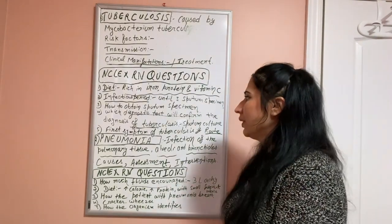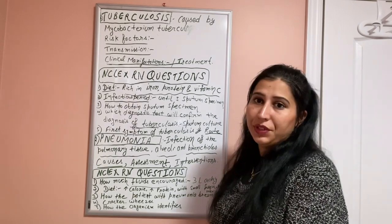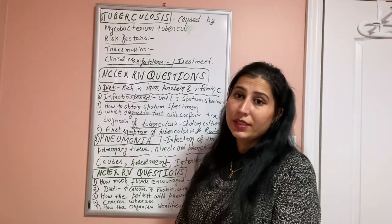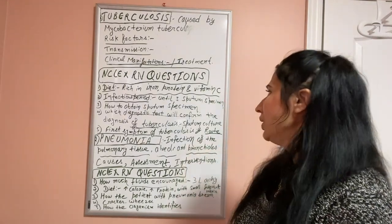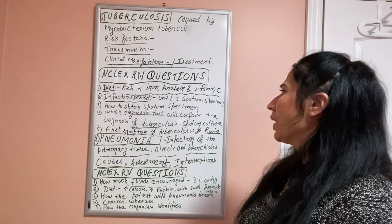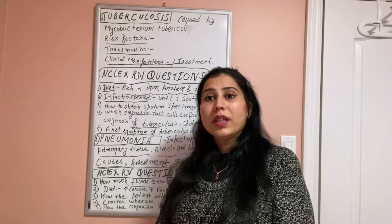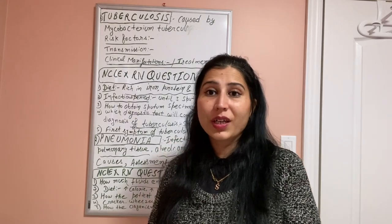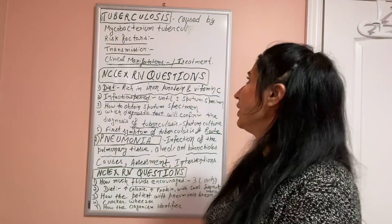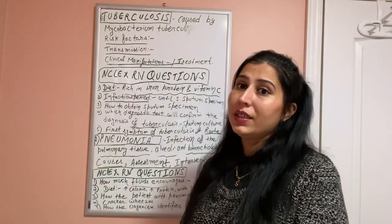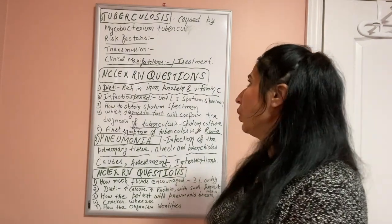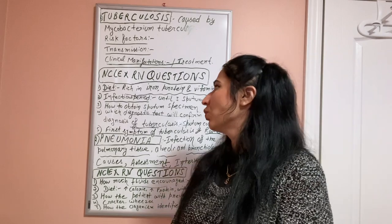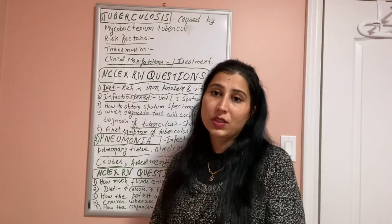Another question is about the infectious period. The doctor always recommends three sputum specimens. If the three sputum specimens still show Mycobacterium tuberculosis bacilli, the person is still contagious. After three sputum specimens come back negative for Mycobacterium tuberculosis, the infectious period is over and the person can go to work and public places.